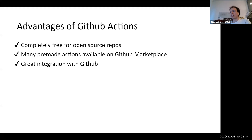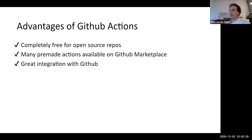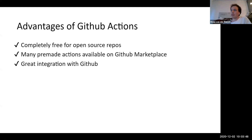So why did we choose GitHub Actions specifically? For open source repositories on GitHub, it's completely free — that's a huge bonus. If you have private repositories, you have a budget that's free per year, and if you go over that budget you have to pay. But for open source projects it's completely free and limitless. Another nice thing is that there are a lot of pre-made actions already available on the GitHub Marketplace. And it has great integration with GitHub, of course.